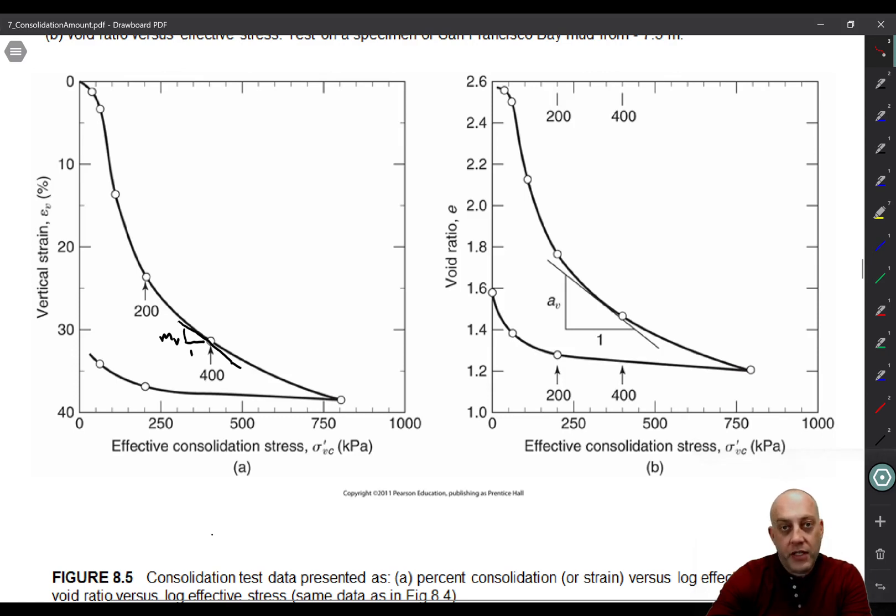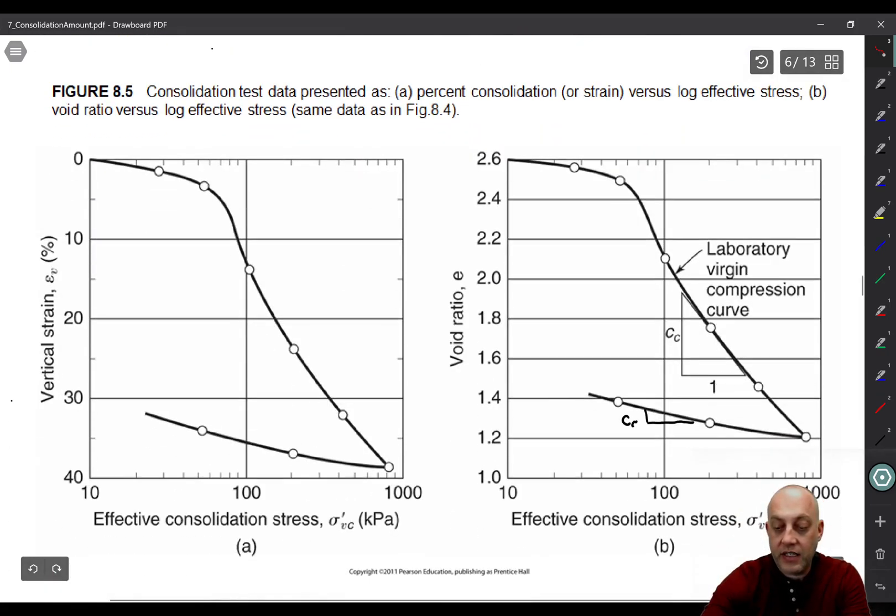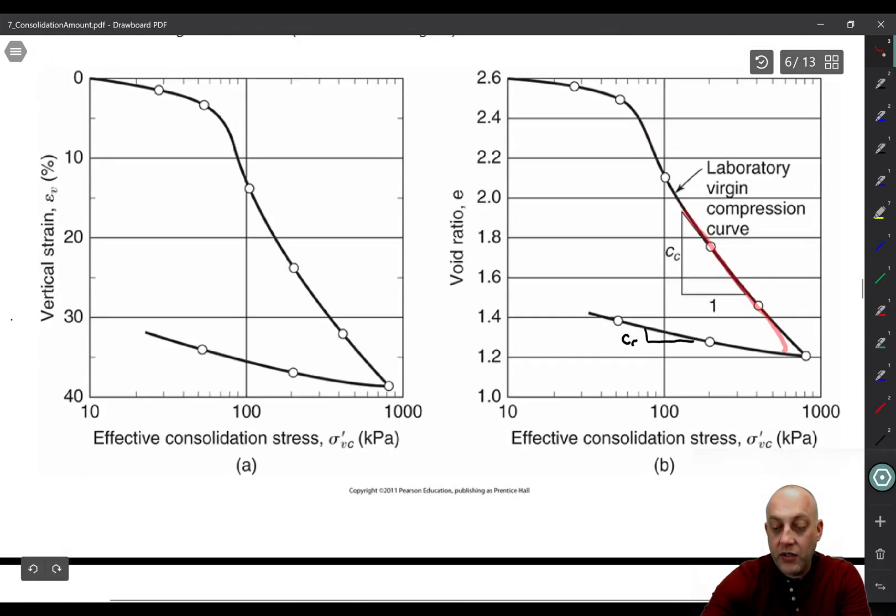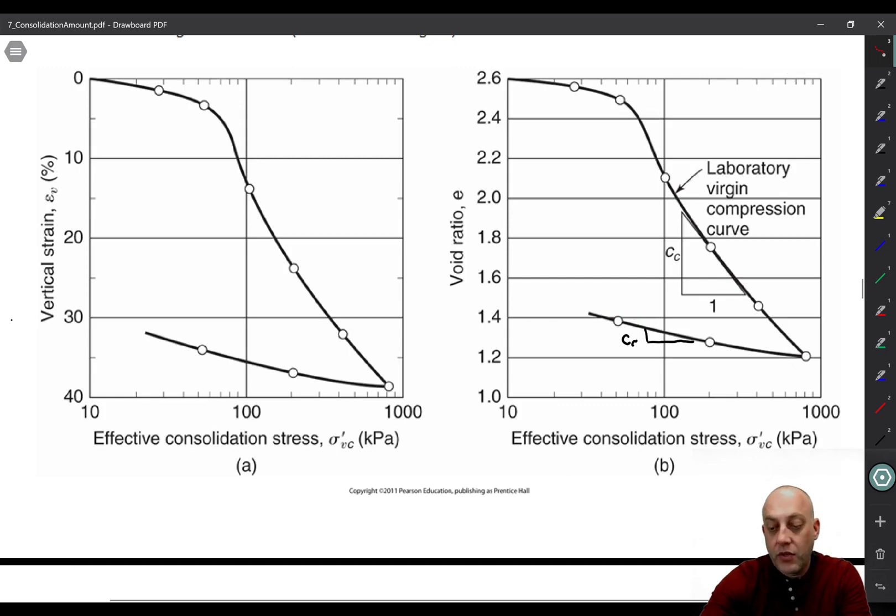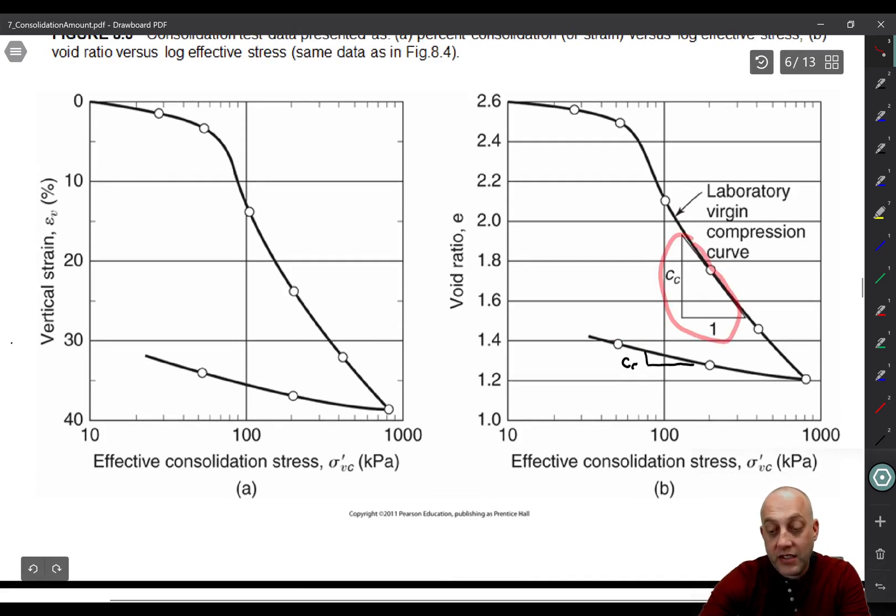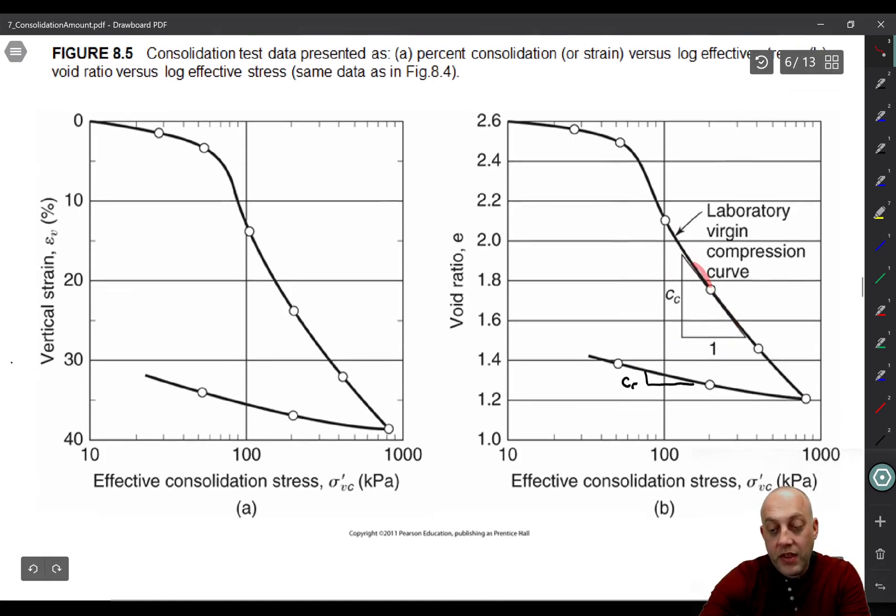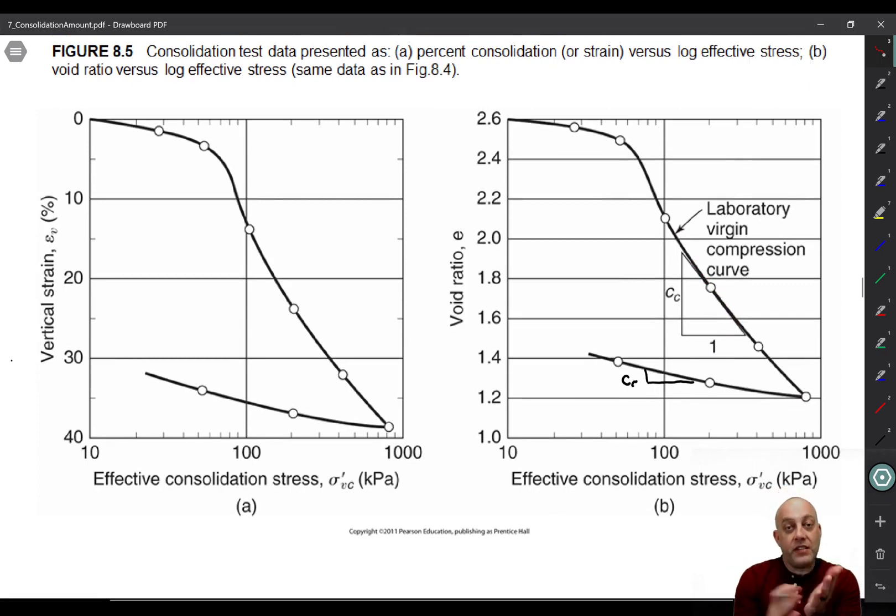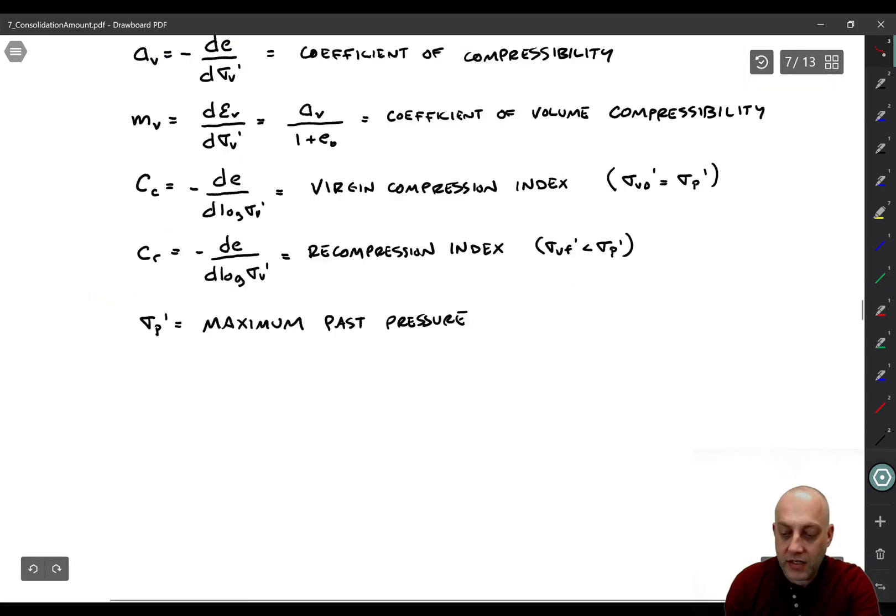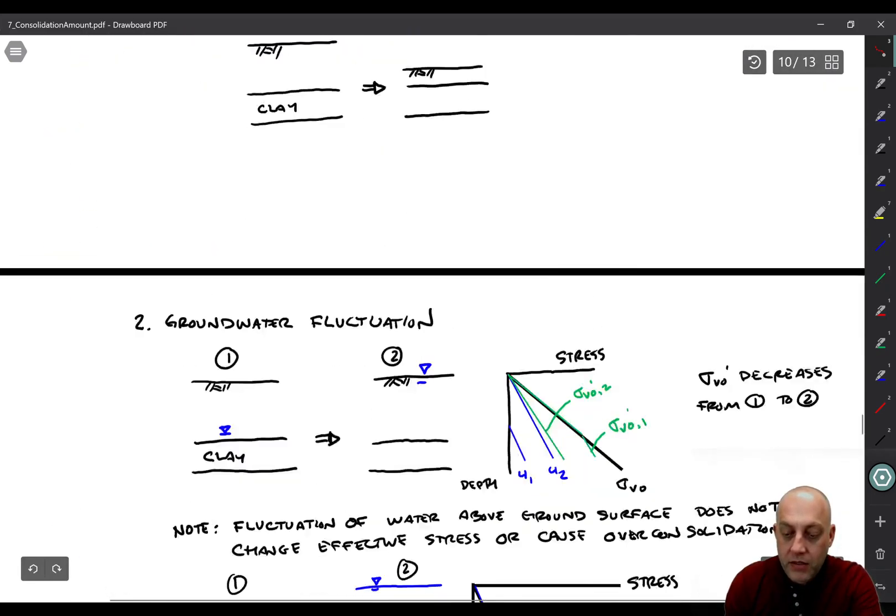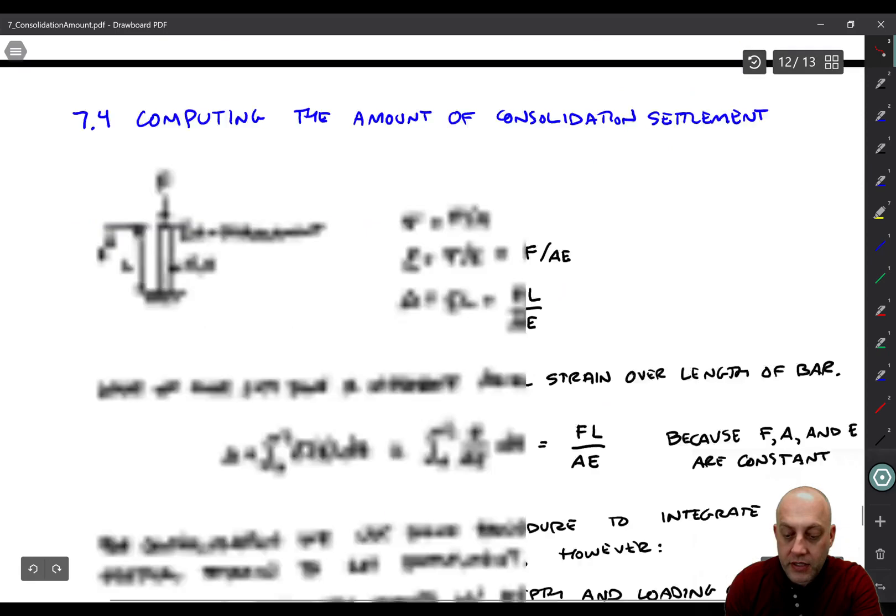It also varies with loading condition. So this curve right here happens to be the normal consolidation line. And then you could be on this unload reload line instead. So notice that even if C sub C is constant, the actual strain stiffness will vary with depth. So it is a depth variable.